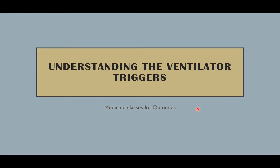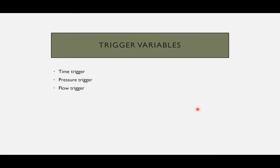Understanding the ventilator triggers. These are phase variables. Inside the phase variable there are different types of variables, and one of them is trigger variables. A trigger variable is the variable that determines the start of inspiration. There are three trigger variables: time, pressure, and flow. Either time, pressure, or flow can determine the start of inspiration.